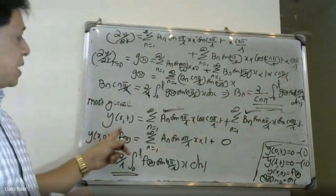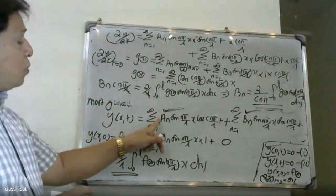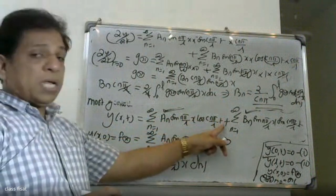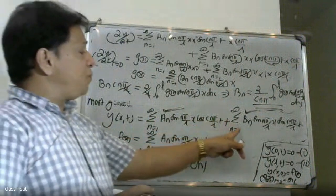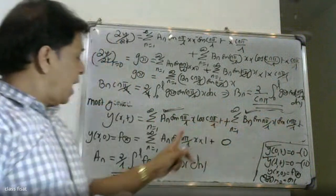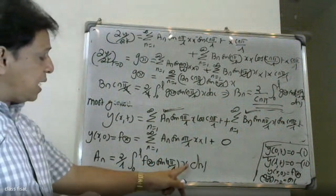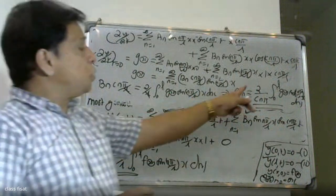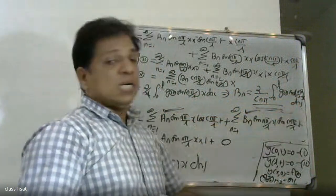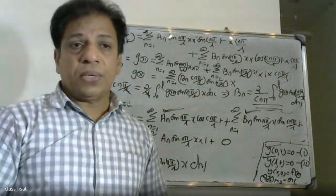The final answer for the displacement Y(x, t) is: Y(x, t) = σ (n=1 to ∞) Aₙ·sin(nπ/L · x)·cos(cnπ/L · t) + σ (n=1 to ∞) Bₙ·sin(nπ/L · x)·sin(cnπ/L · t), where Aₙ = (2/L)·∫₀ᴸ f(x)·sin(nπ/L · x) dx and Bₙ = (2/cnπ)·∫₀ᴸ g(x)·sin(nπ/L · x) dx.